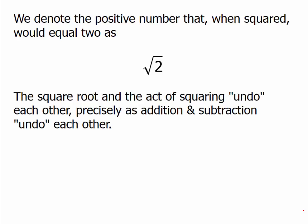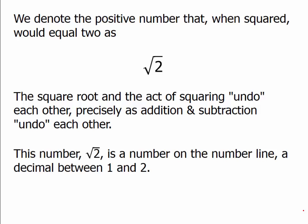The square root and the act of squaring undo each other, precisely the way that addition and subtraction undo each other, precisely the way that multiplication and division undo each other. They are inverse operations, or from a more sophisticated point of view, they are inverse functions. Square root of 2 is actually a real, bona fide number. It has the same rights as 5, or 13, or any other real number on the number line.